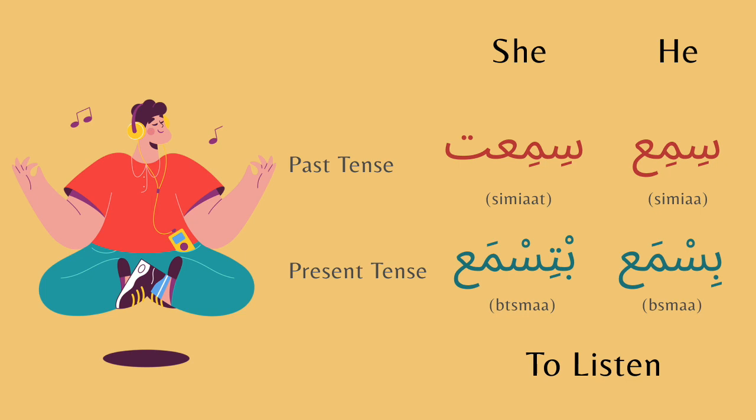I'll repeat all forms of the verb once more, starting from past tense going right to left and then moving on to present tense and going right to left: sima, simaat, bismar, tismar.